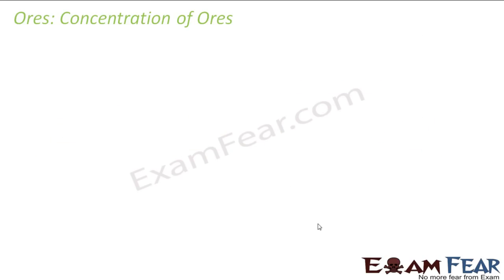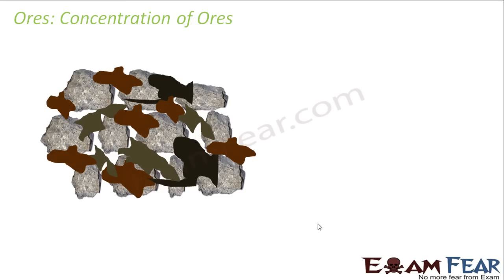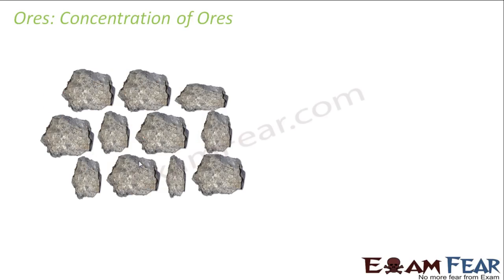Let's start with the concentration of ore. Concentration of ore is the process where from raw ore, unwanted particles like sand, clay, etc. — the brown, gray, and black particles — are removed. This process is called concentration of ore, also called dressing or beneficiation.